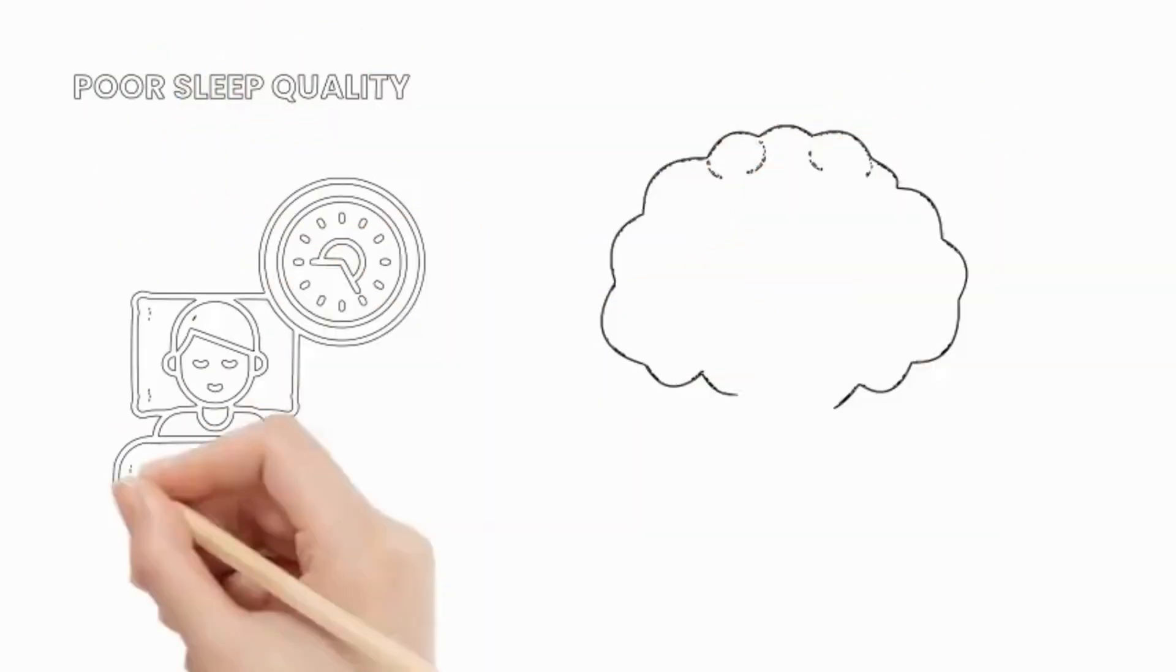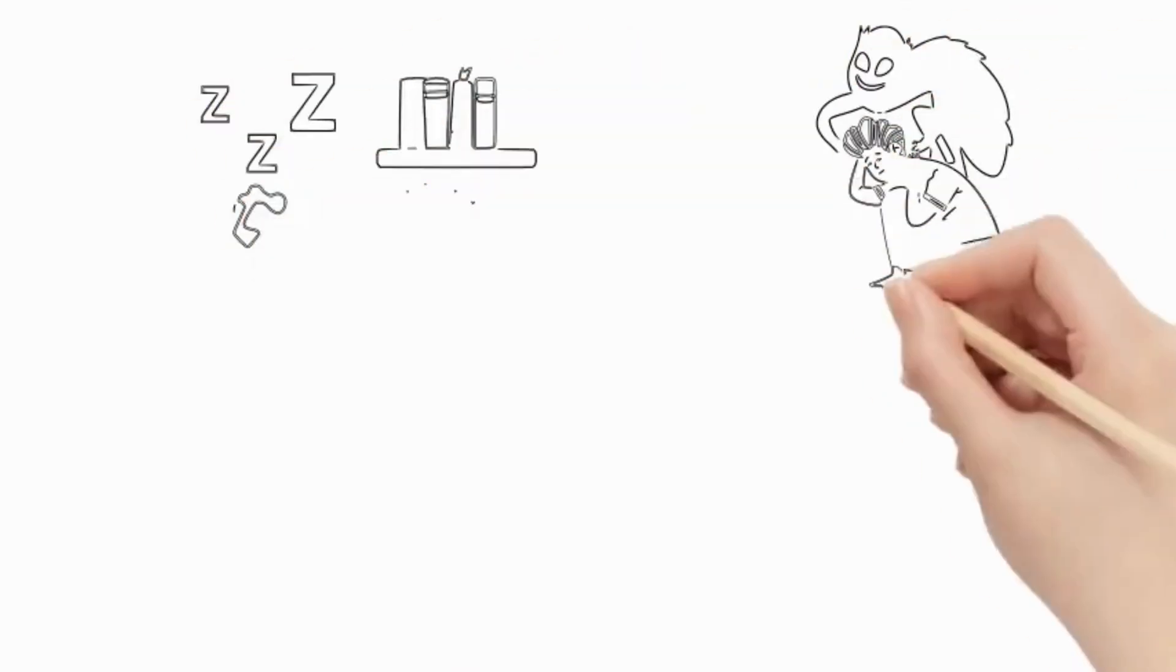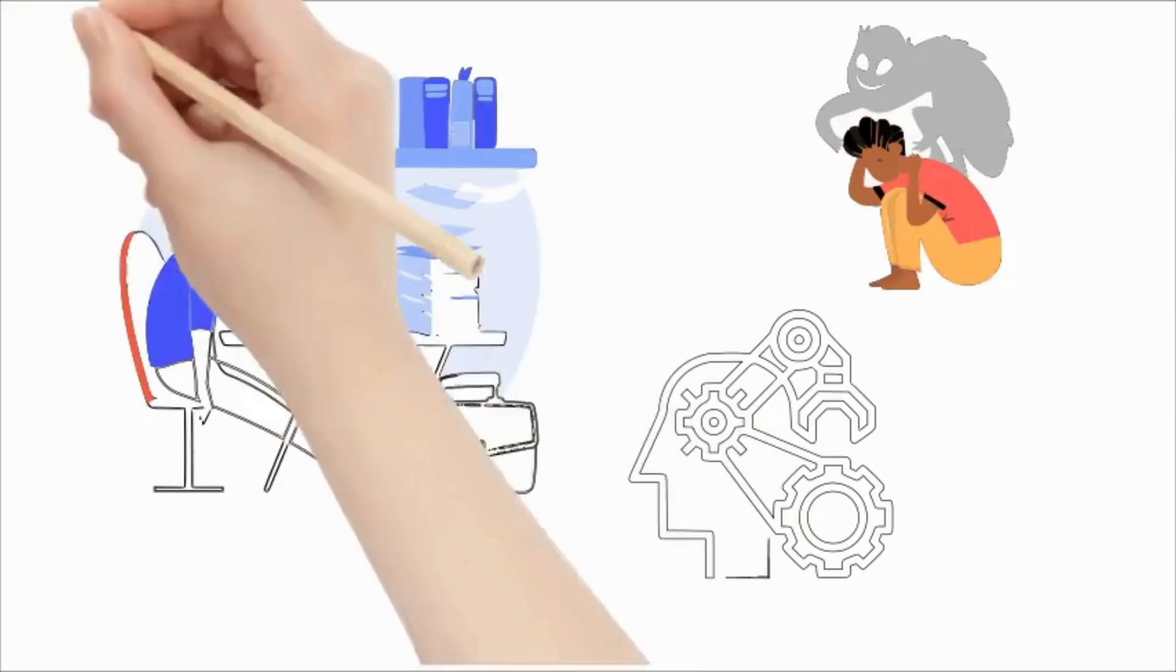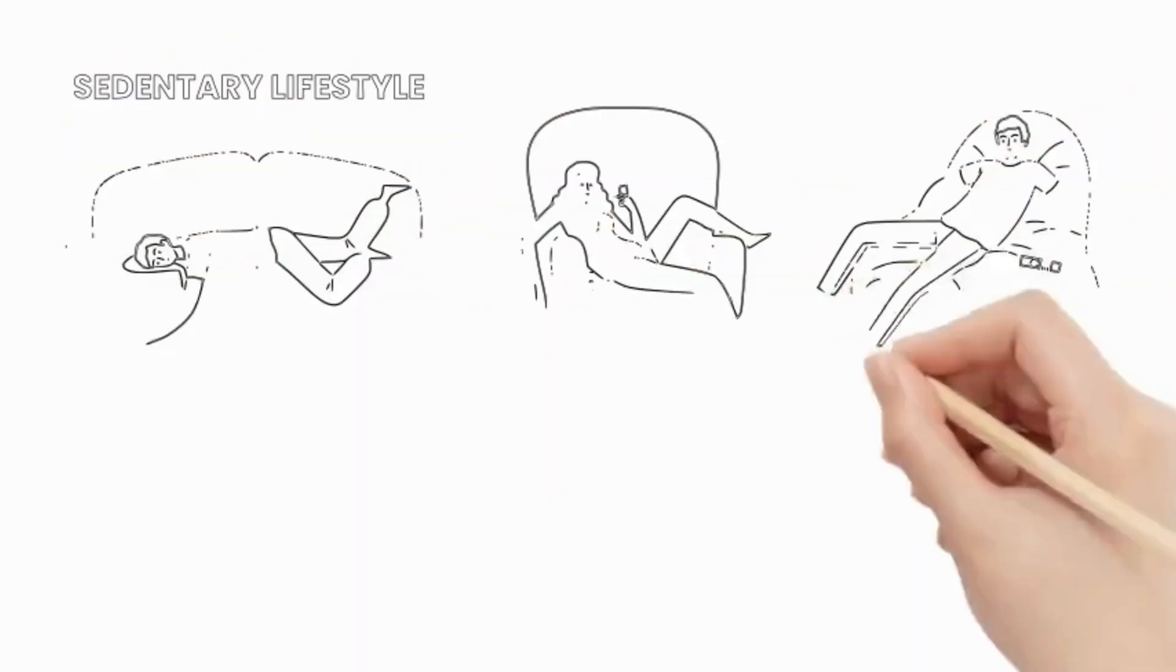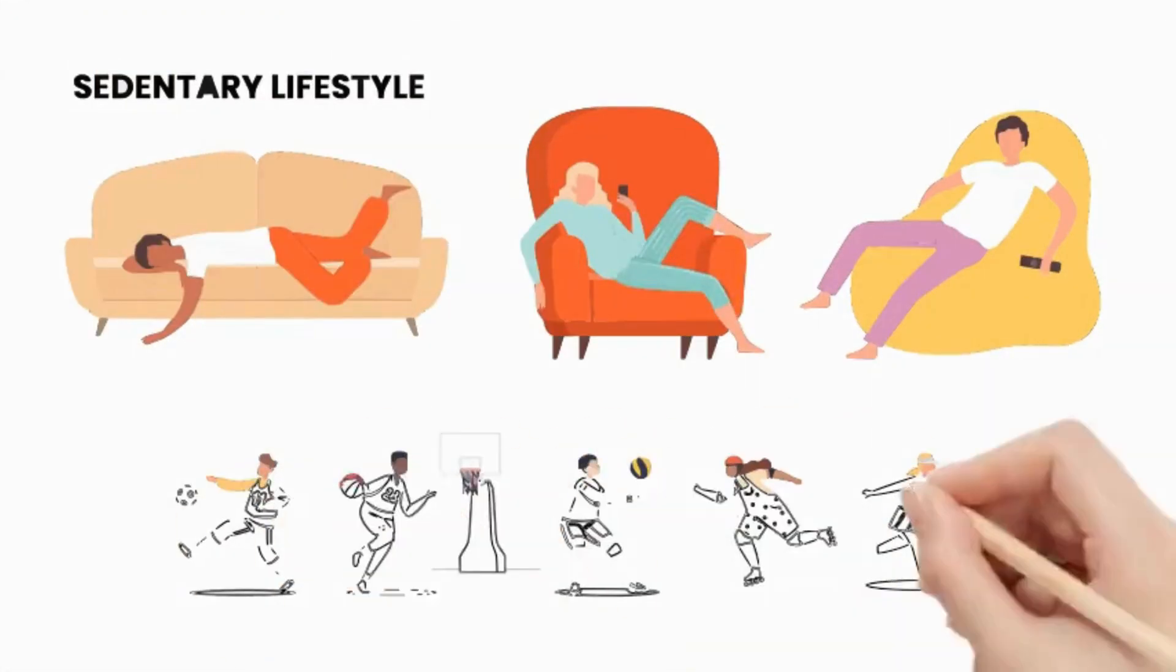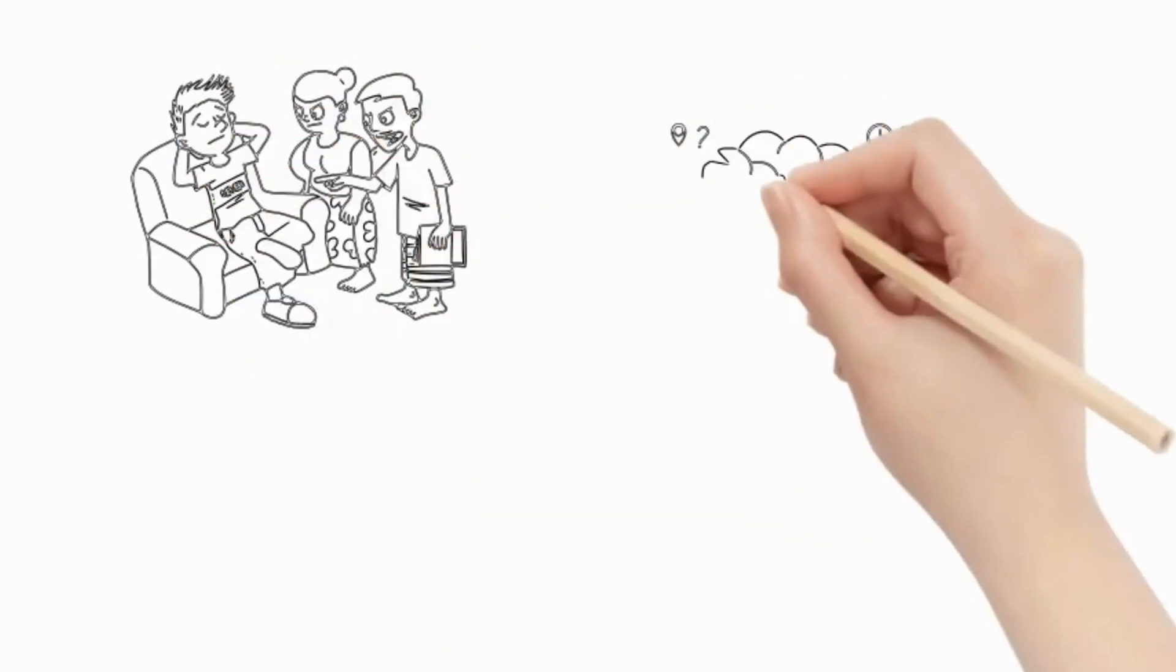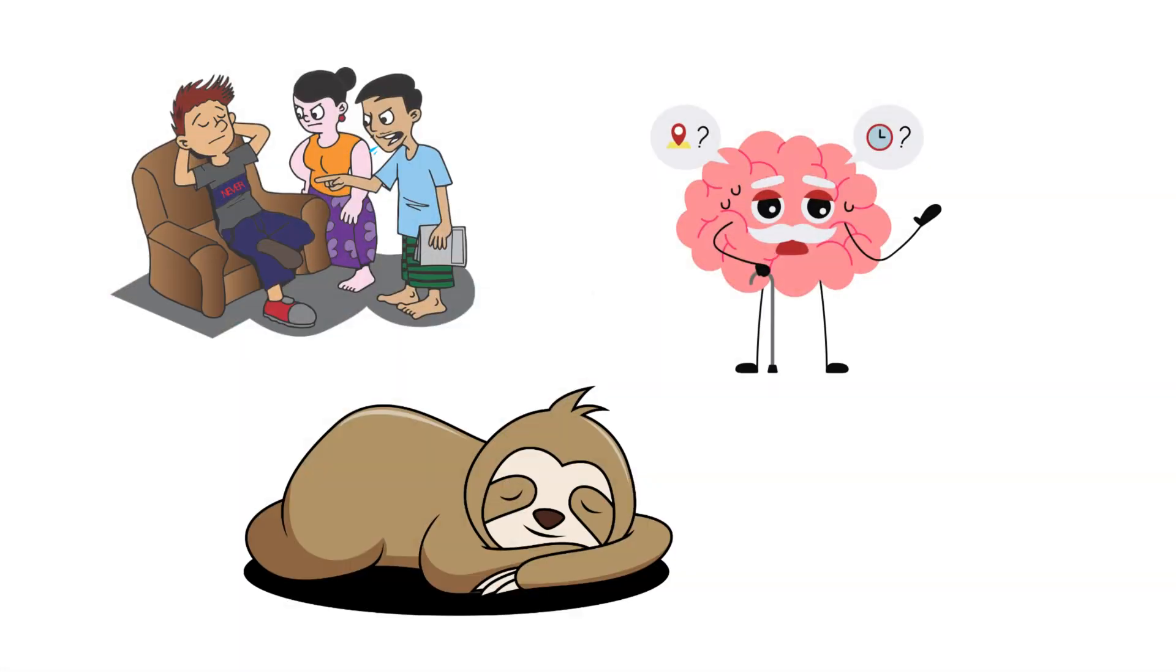Poor sleep quality: Sleep quality is vital for optimal brain function. Regular sleep deprivation can lead to memory decline, making it difficult for the brain to store and process long-term memories. Sedentary lifestyle: Individuals who do not engage in regular physical activity are at a higher risk of experiencing negative cognitive effects, particularly regarding memory. A lack of exercise also increases the risk of developing age-related dementia.